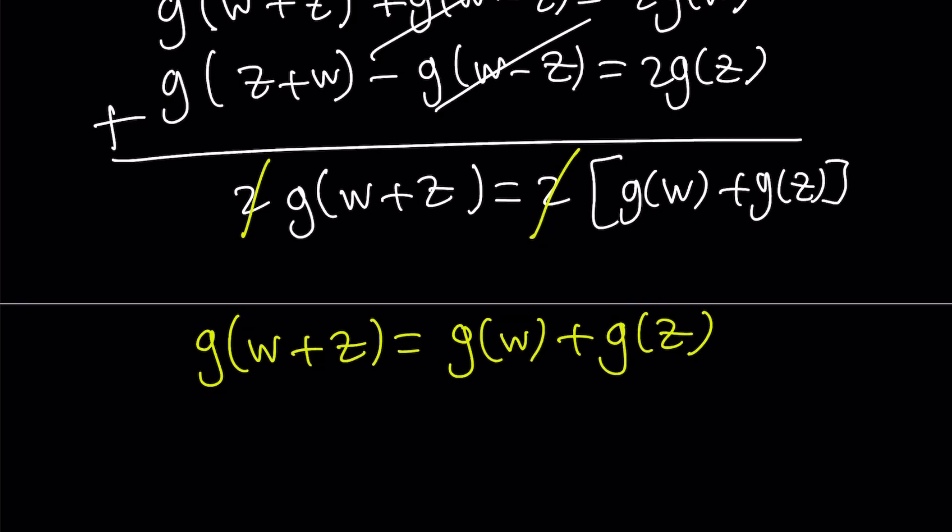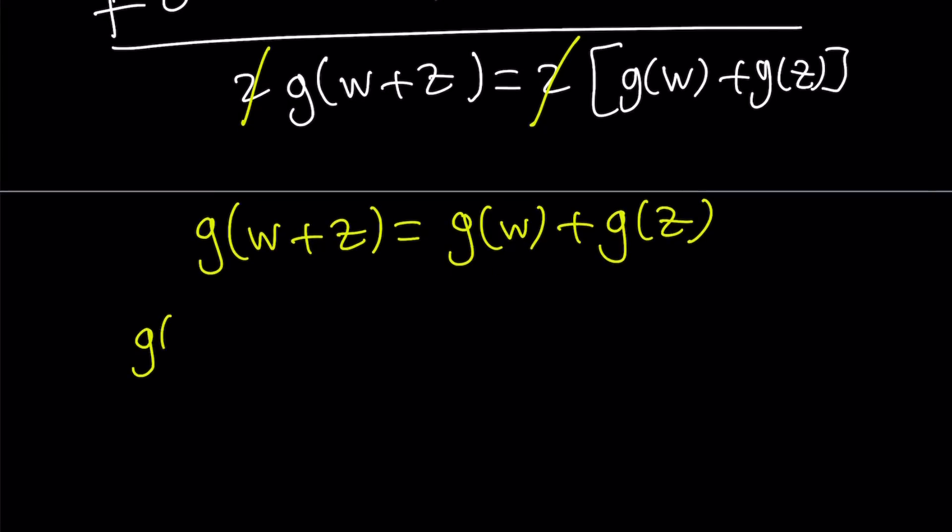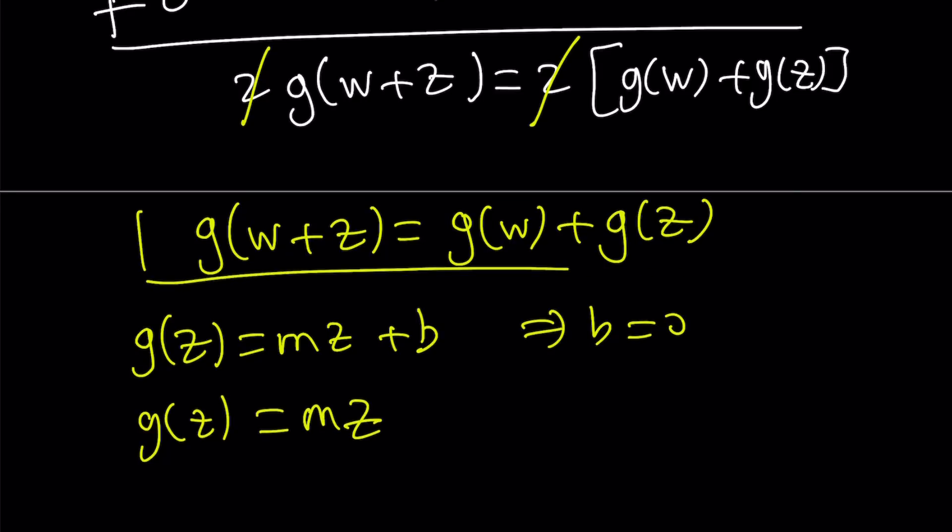That leaves us with something super nice, and that is called Cauchy's functional equation. Now g satisfies certain criteria, and we can safely say that from here g must be a linear function. So g is linear, and you can write g as g(z) = mz + b. But notice that we have g(0) = 0. So from here, b is basically 0, and g(z) can be written as mz. Obviously that's the function that satisfies this equation. Great.